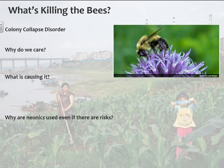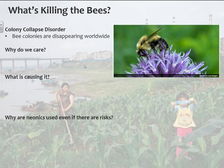Moving on to a new topic — there was an article about bees. This is more on the biodiversity side of things. There is something called colony collapse disorder: bee colonies are disappearing worldwide. This started mainly around 2003, when they started to discover that these bee colonies were collapsing.